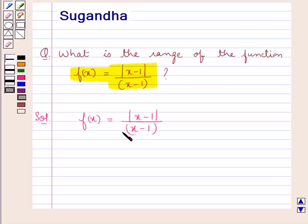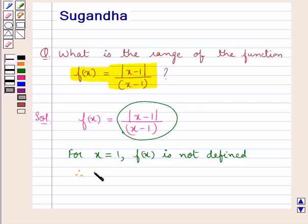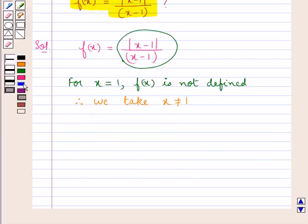Now for x = 1, we find that f(x) is not defined. Therefore, we take x ≠ 1 for this function. So we have f(x) = |x-1|/(x-1) with x ≠ 1.